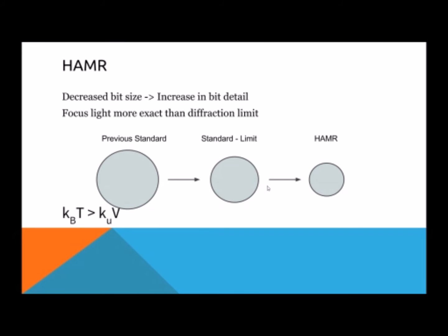HAMR and heat - we are actually able to shrink that limit size into something even smaller. So they're actually expecting to be able to put one terabyte to 20 terabytes into a square inch sometime between now and 2020 is the expected date.